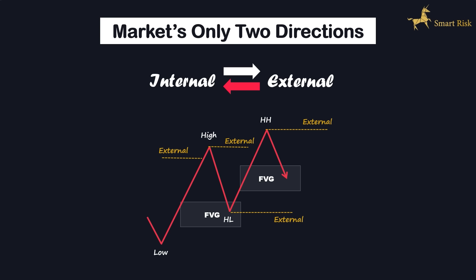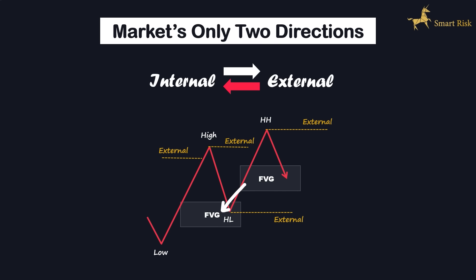Looking at this schematic figure, it shows a rally wave that moves upward, sweeping the external liquidity gathered above the previous high. After this, the price shifts toward internal liquidity — indicated by this fair value gap — to fill the gaps left behind. From internal liquidity, the price transitions back to the external phase, moving from the fair value gap to external liquidity by sweeping the liquidity above this high. With external liquidity swept, the price then aims to balance by targeting internal liquidity, prompting the price to drop and fill the most recent fair value gaps. Once the price fills this fair value gap, it is likely to pursue external liquidity.